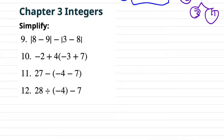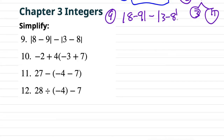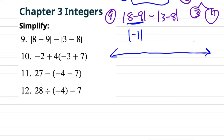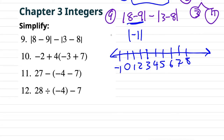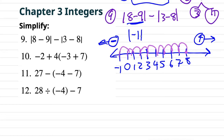Number nine: simplify — absolute value of (8 minus 9) minus absolute value of (3 minus 8). We simplify inside the absolute value bars first. 8 minus 9 is negative 1. If that's confusing, use a number line: start at 8, count 9 to the left, and you land on negative 1. Then we have minus the absolute value of (3 minus 8), which is another subtraction problem.